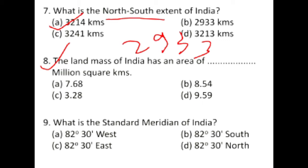The land mass area of India is about 3.28 million square kilometers. The standard meridian of India is 82 degrees 30 minutes east.